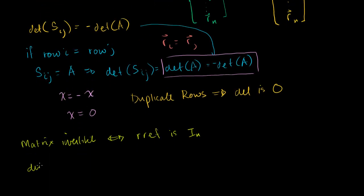So we know that duplicate rows could never get reduced row echelon form to be the identity. Or duplicate rows are not invertible. And we also learned that something is not invertible if and only if its determinant is equal to 0.